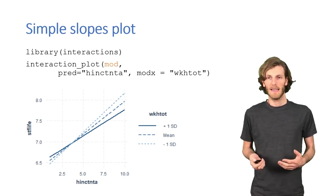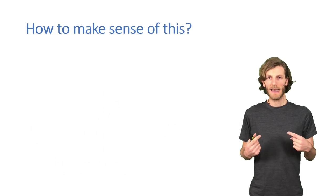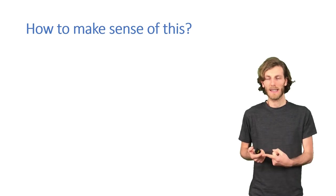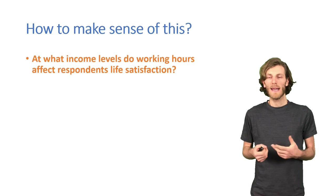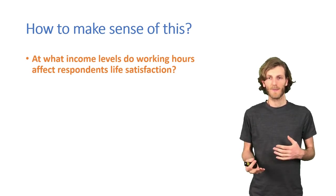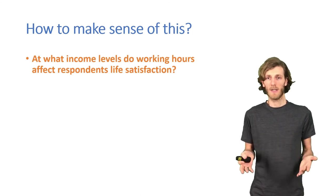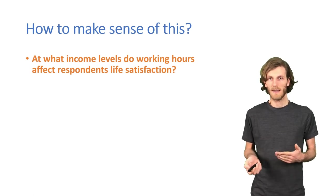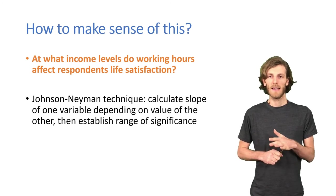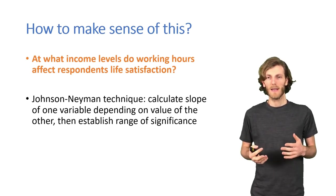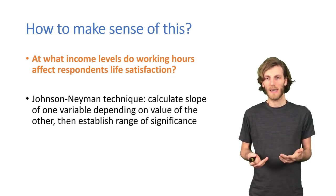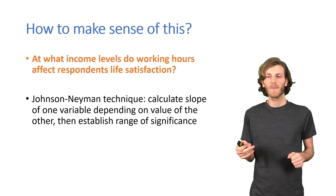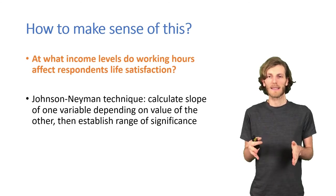We might quite specifically be interested in that way of looking at the data. So not in the slope of income. Or you might actually wonder, when are working hours related to happiness? For the main effect, we see that on average, they are not. But our question for the interaction model might also be, when are they actually related? That's what the Johnson-Neyman technique allows us to do, because that now calculates the slope that working hours, or that either of the two variables has, at each value of the other variable. And then figures out where that slope is significant.